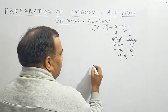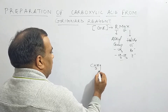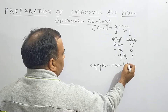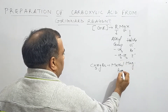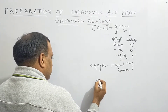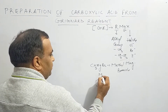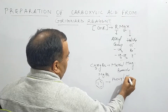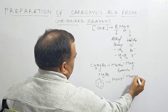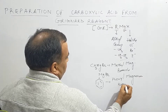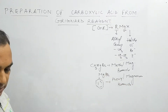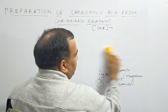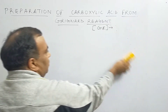For example, CH₃MgBr is methyl magnesium bromide. Similarly, phenyl magnesium bromide uses a benzene ring in place of the alkyl group. This is how we can write and name a particular Grignard reagent. Now, since we have to prepare carboxylic acid with the Grignard reagent, let us see the process.